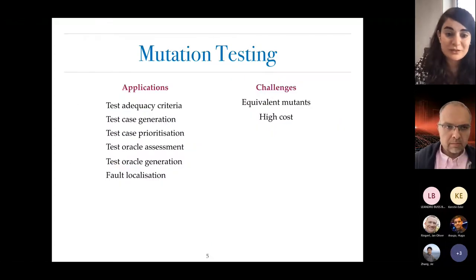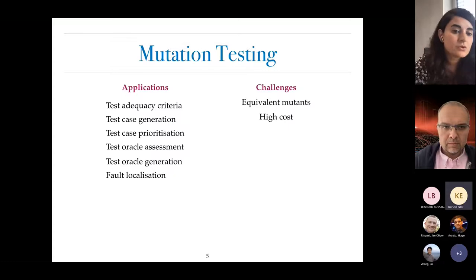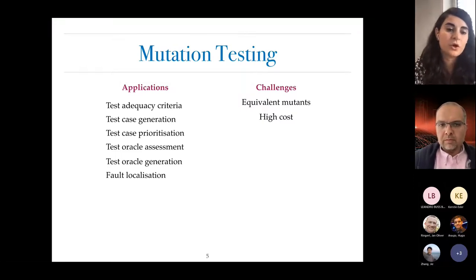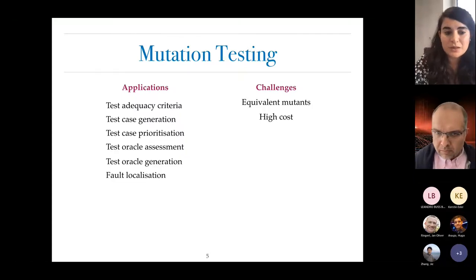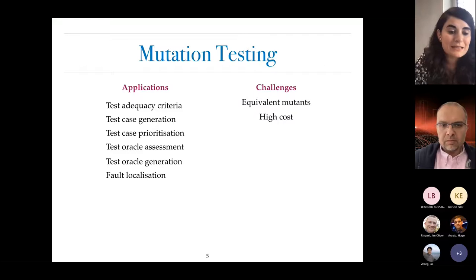Mutation testing is a popular research topic and has many applications. It serves as a adequacy criteria for test suites, but it's also used to generate test cases — we select new test cases based on the number of mutants they kill. Following the same logic, it's used for test case prioritization. It also serves for test oracle assessment and generation, and it's widely used in research for fault localization.